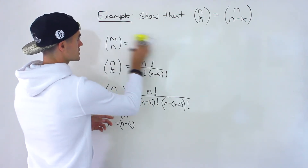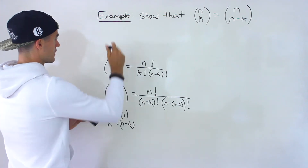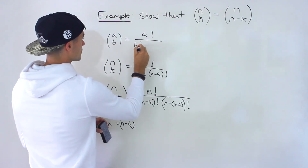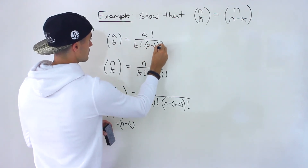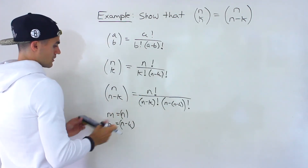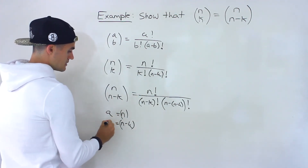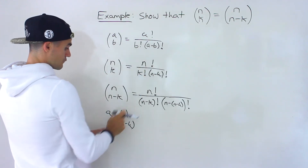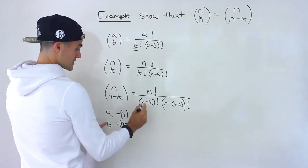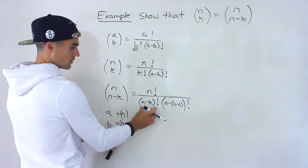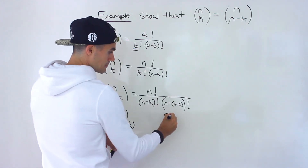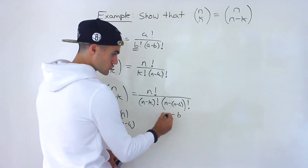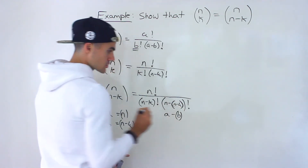Actually, I'm going to change this just to simplify — I want this to be a choose b. So this is a factorial over b factorial times a minus b factorial. So we have a and b. We end up with a factorial being n factorial, and b factorial being n minus k factorial. Then a minus b factorial — but b is the whole expression n minus k, so you've got to subtract that whole expression.